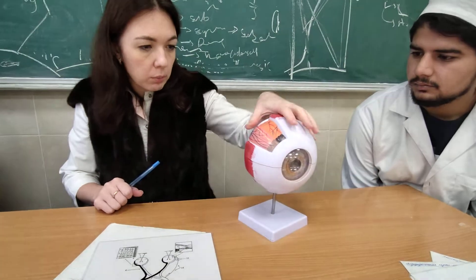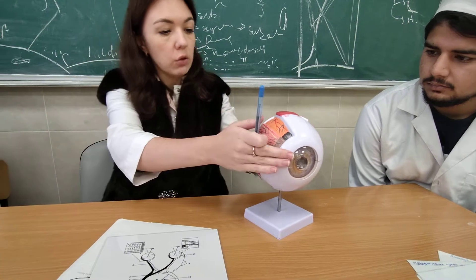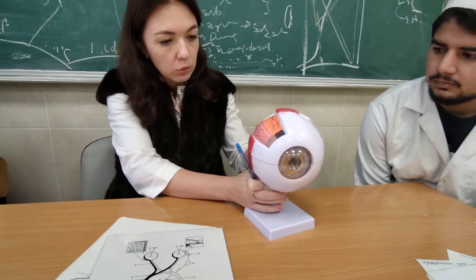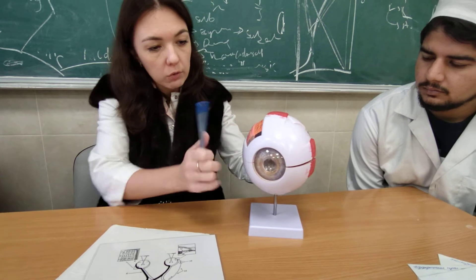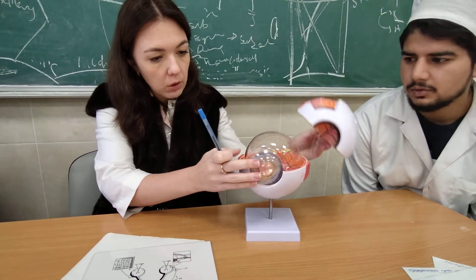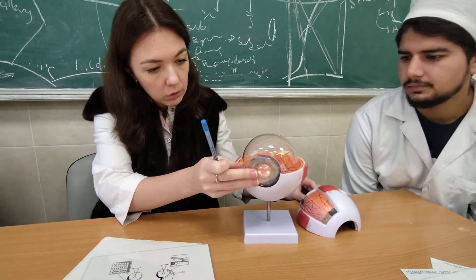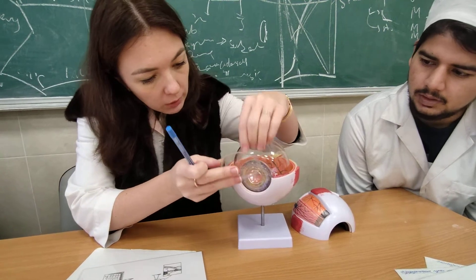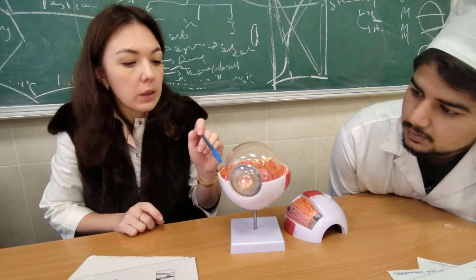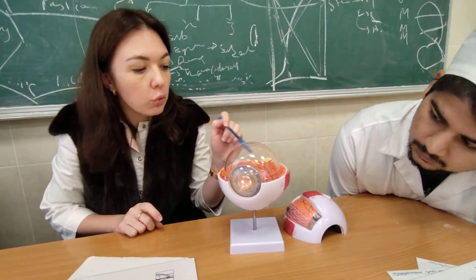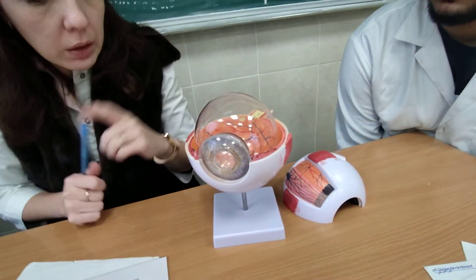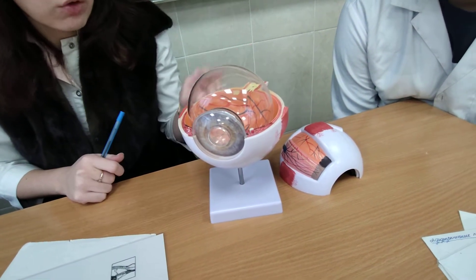You studied this at school — it's very simple. There are three tunics. The outermost tunic is the fibrous tunic — tunica fibrosa — which consists of the sclera and cornea. Under it, there is the vascular tunic, which includes the choroid, ciliary body, and iris. The innermost tunic is the neural tunic, or retina.